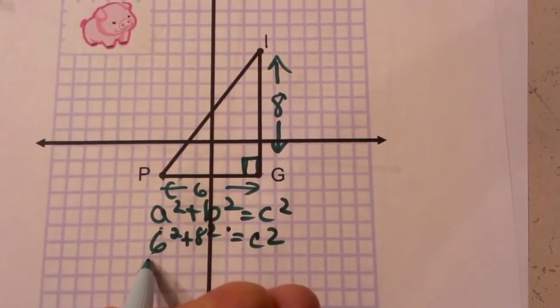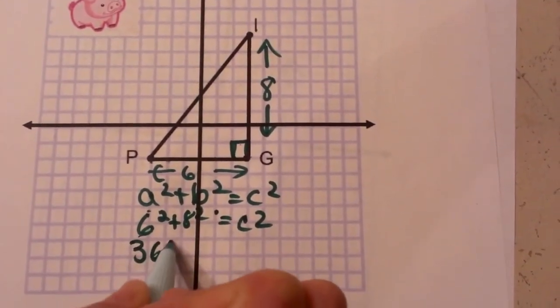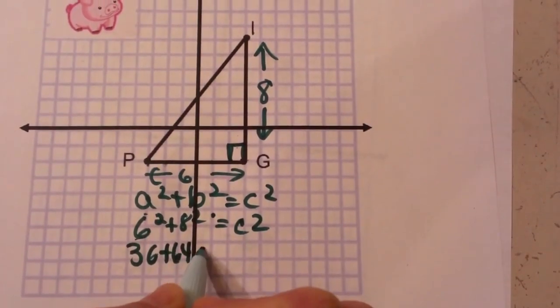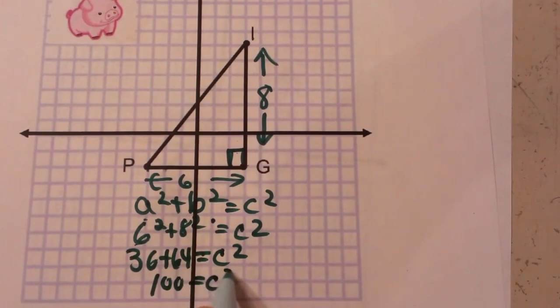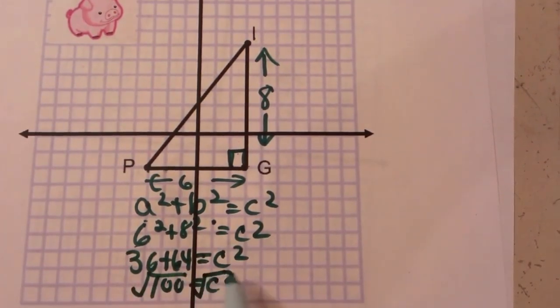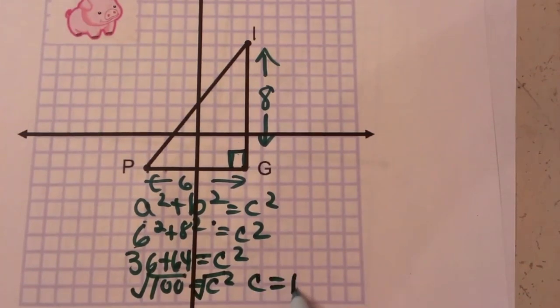Well, 6 squared is 36, 8 squared is 64, and that's equal to C squared, so that's 100 equals C squared. And then to undo a square we take the square root of both sides, so C has to be 10.